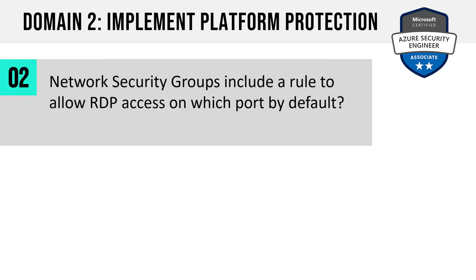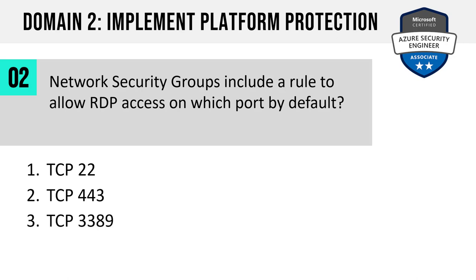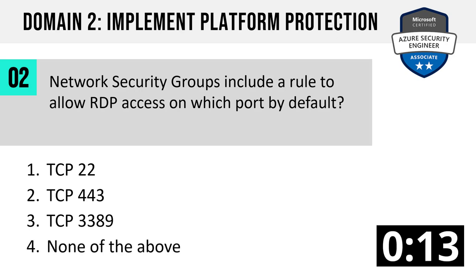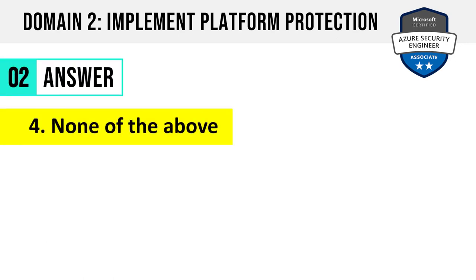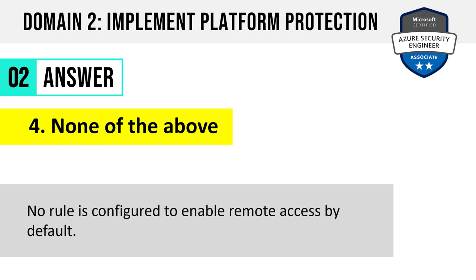Number 2. Network security groups or NSGs include a rule to allow RDP access on which port by default? Is it TCP port 22, TCP 443, TCP 3389, or none of the above? The answer is four: none of the above. There is no rule configured to enable remote access to an Azure VM by default.